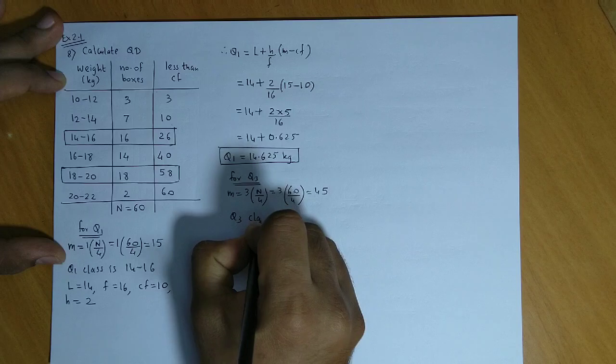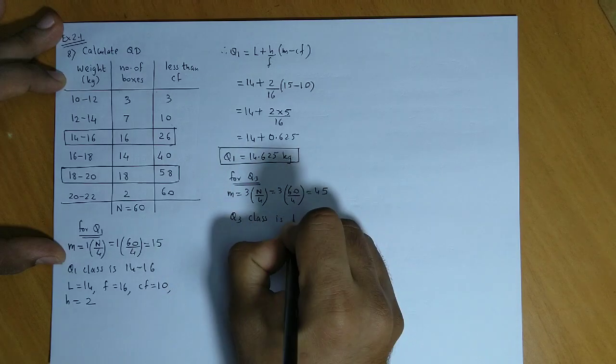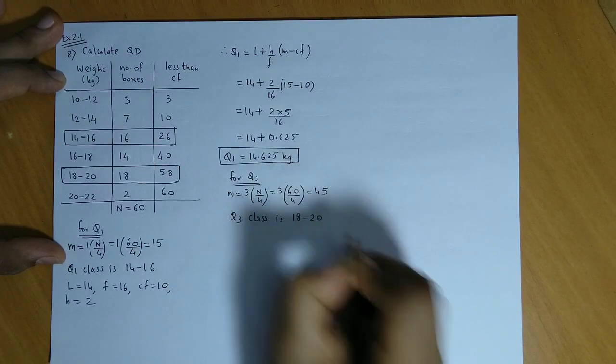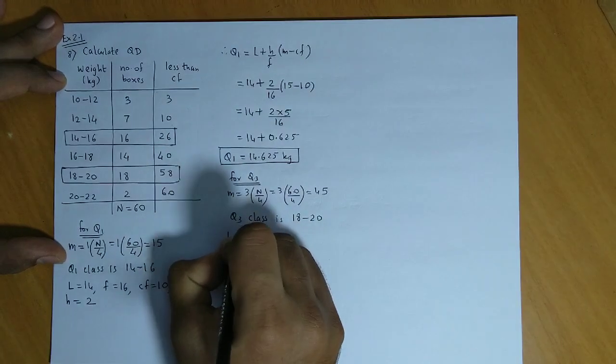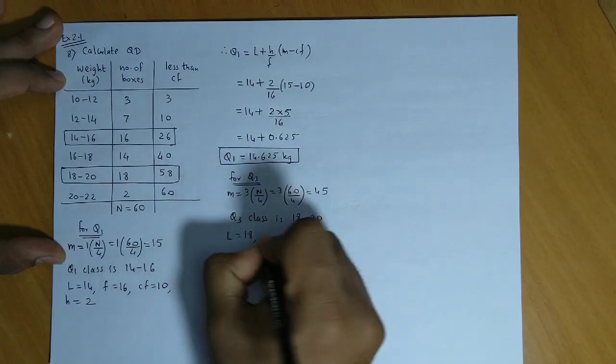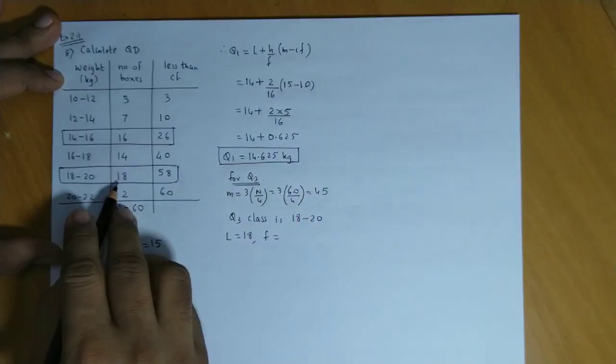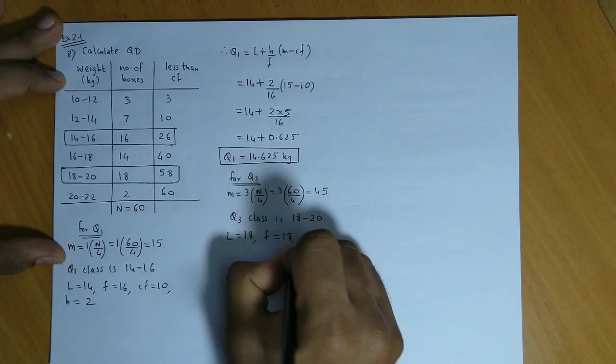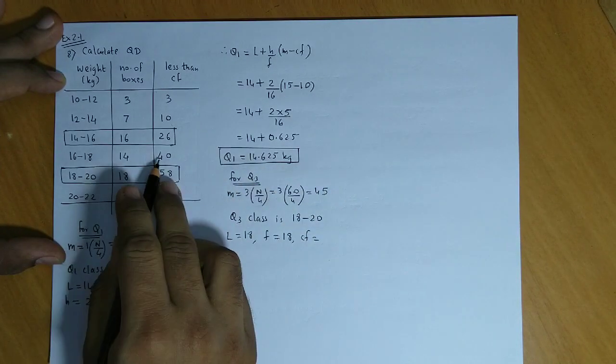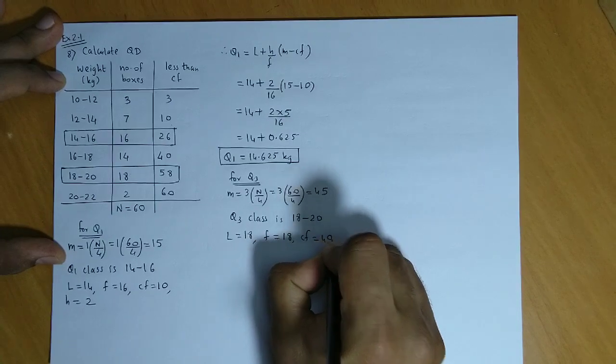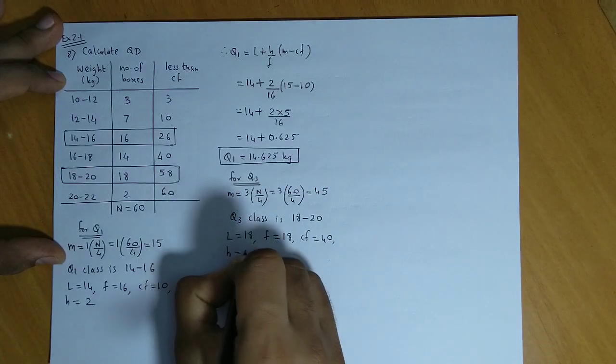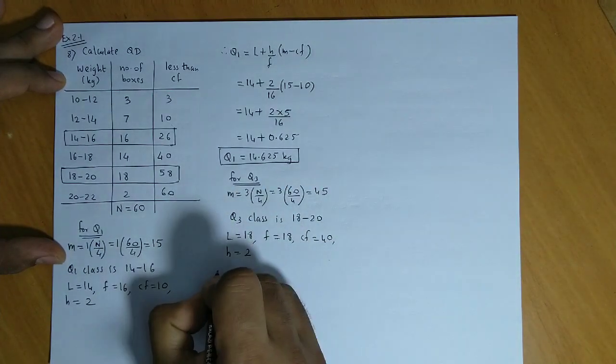The Q3 class is 18 to 20. The lower limit is 18, the class frequency is 18, CF of the previous class is 40, and height is again 2.